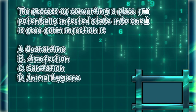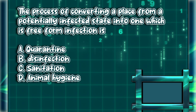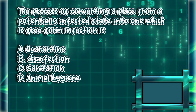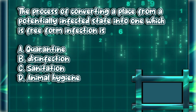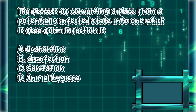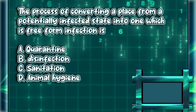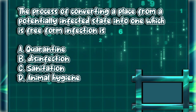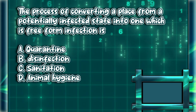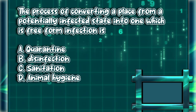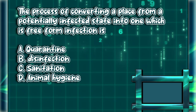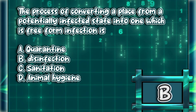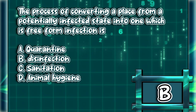The process of converting a place from a potentially infected state into one which is free from infection is. A. Quarantine. B. Disinfection. C. Sanitation. D. Animal hygiene. The answer is letter B.